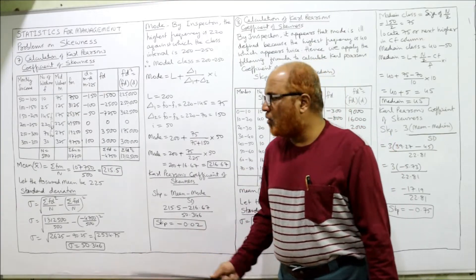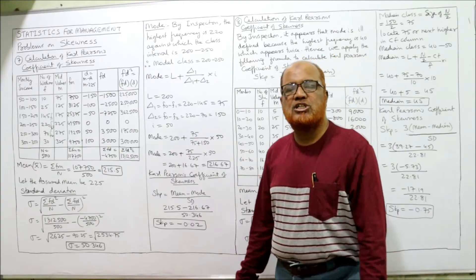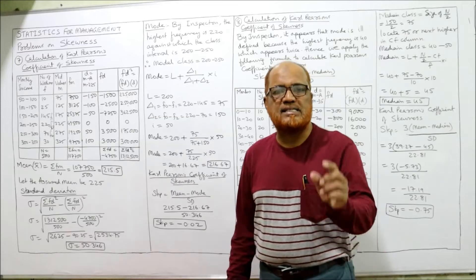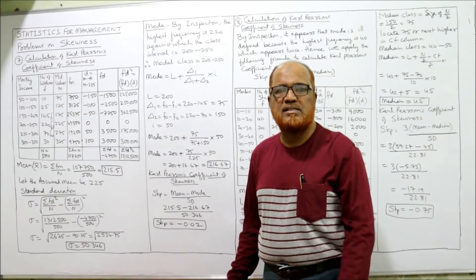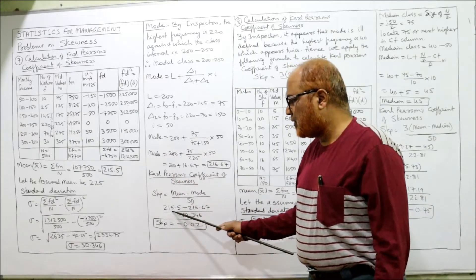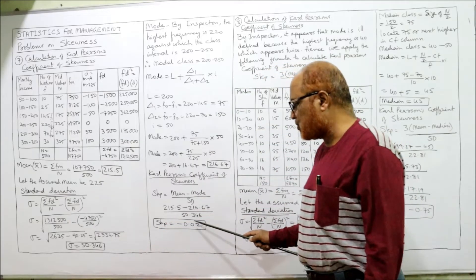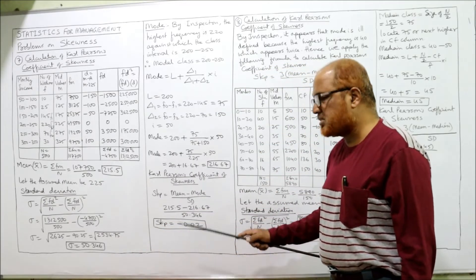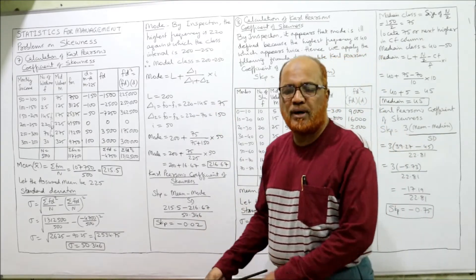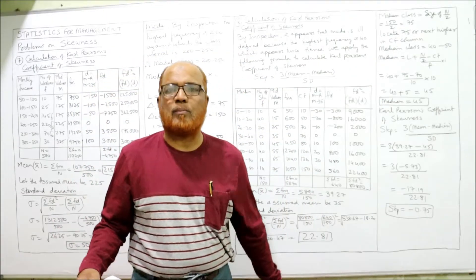All three values are now calculated: mean = 215.5, standard deviation = 50.346, mode = 216.67. Substituting into Carl Pearson's formula: SKP = (Mean − Mode) / σ = (215.5 − 216.67) / 50.346 = −0.02. This is the end of problem number 7. Now the last and final problem, problem number 8.